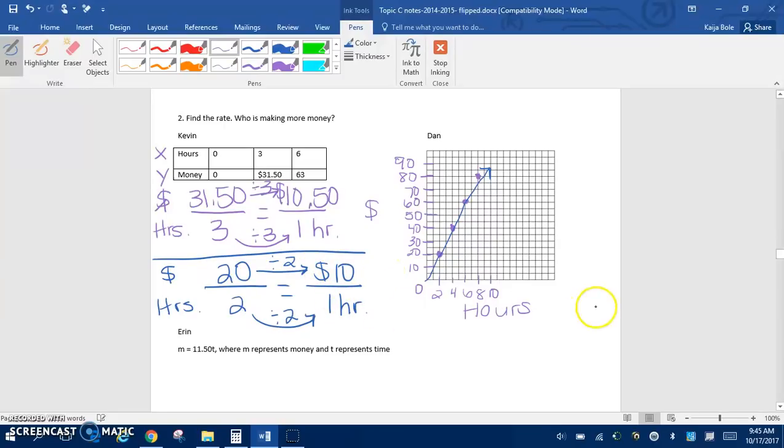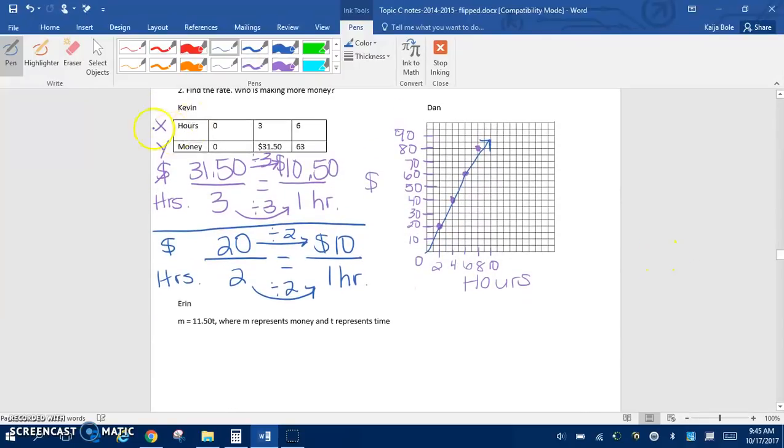And then down here for Aaron, we have our equation. So we have M equals $11.50 T where M represents money and T represents time. So again, we're looking at this 11.5 T. Okay. And that means $11.50 per 1 hour. Right. Because this is what the fraction would be if we had 11.5 over 1 would just be 11.5, which is what they have in the equation.